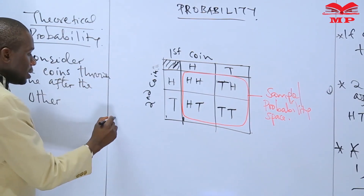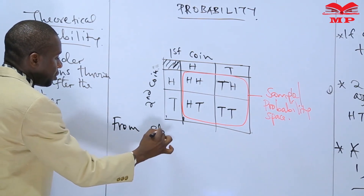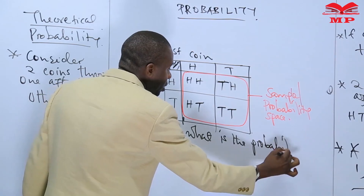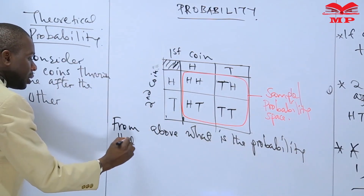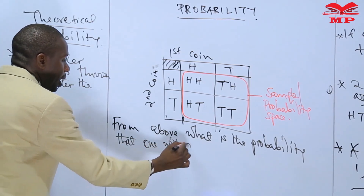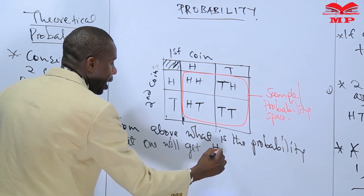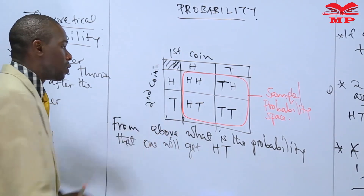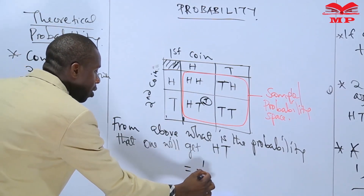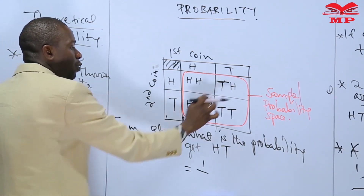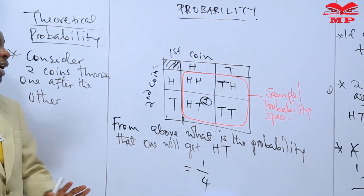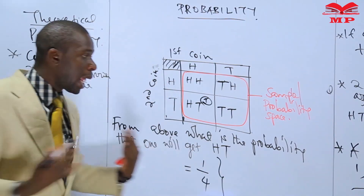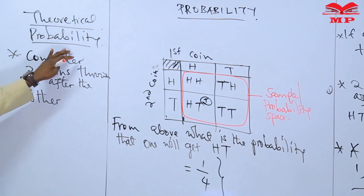For instance, from the above example: what is the probability that one will get a head and a tail in that order? We look at our sample space and find that head-tail in that order is only one outcome. The probability is one over the total number of outcomes in our sample space, which is four. So the probability is one quarter. We've done this without having to do an experiment — that is theoretical probability.